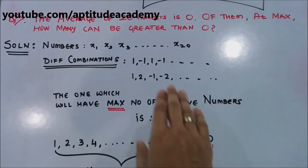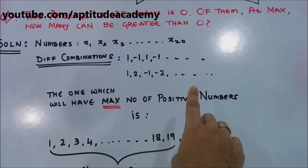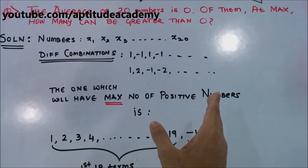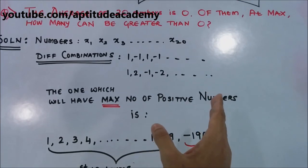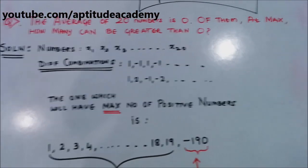So at the end, basically if you have the average of n numbers is 0, the maximum number of positive numbers is n minus 1, or the maximum number of negative numbers is also n minus 1. Thank you.